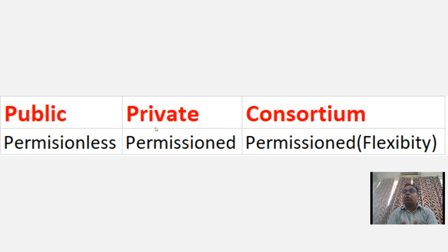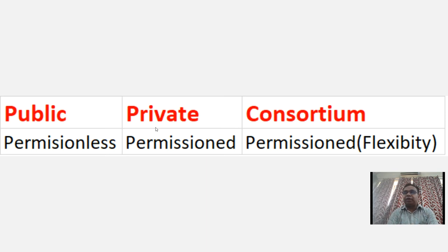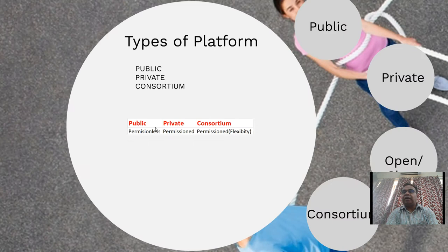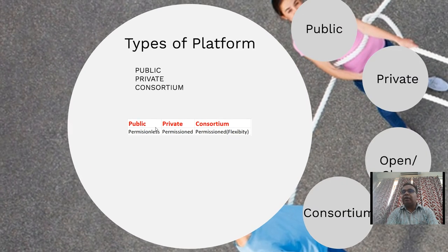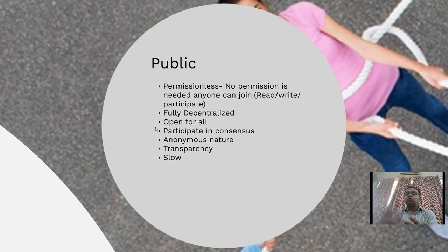In a private blockchain platform, permissions are required — it is a permission-based platform. An organization controls it, and the user has to obtain permissions to join. In a consortium blockchain platform, it is somewhat permissioned but with a little amount of flexibility. We will see the difference between public, private, and consortium in depth.